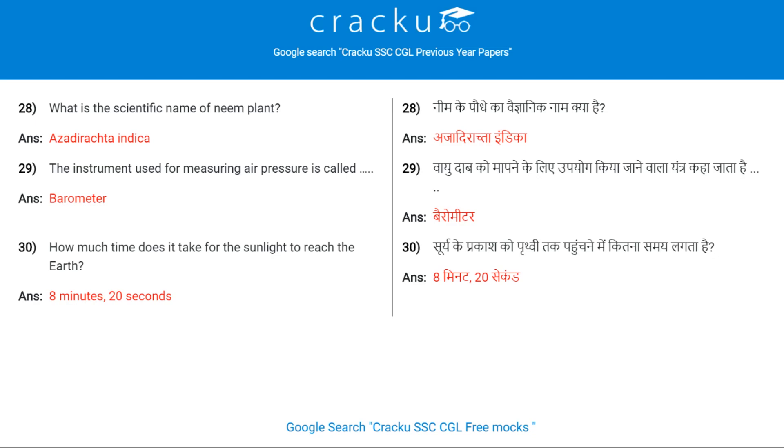How much time does it take for sunlight to reach the earth? 8 minutes 20 seconds.